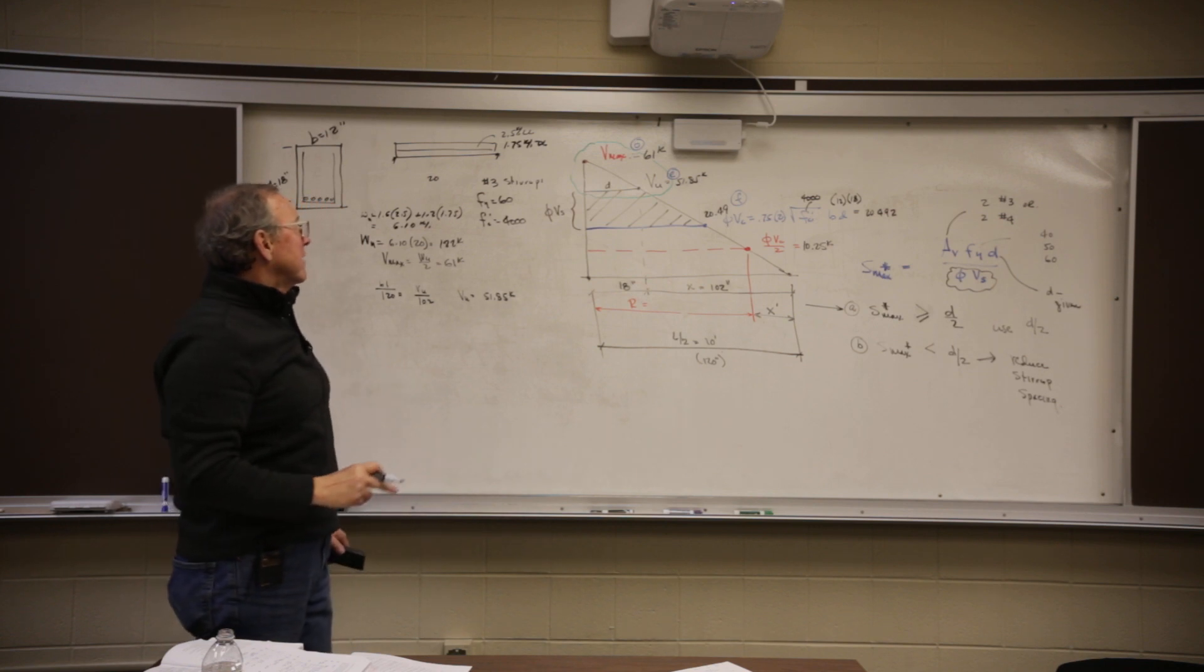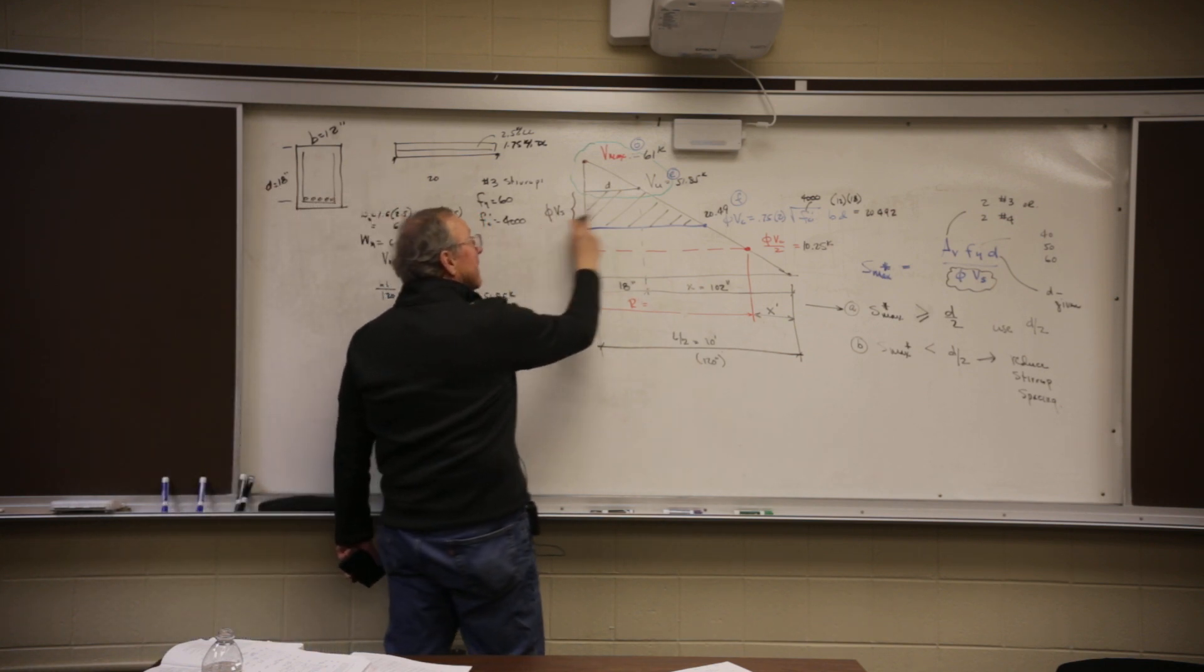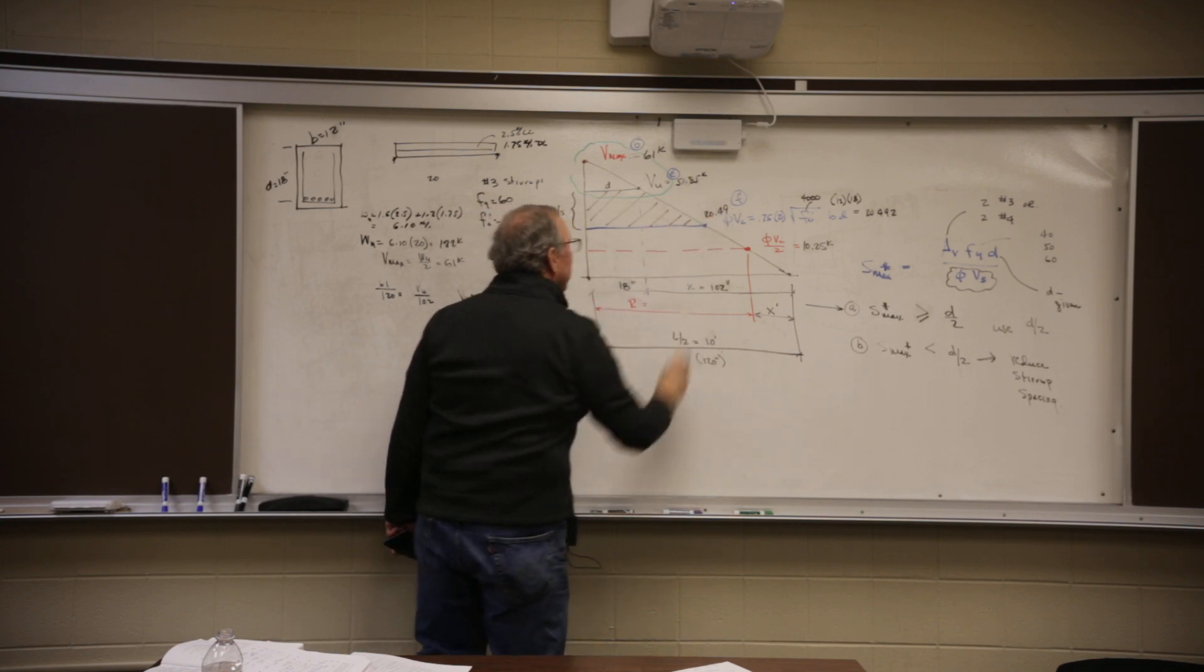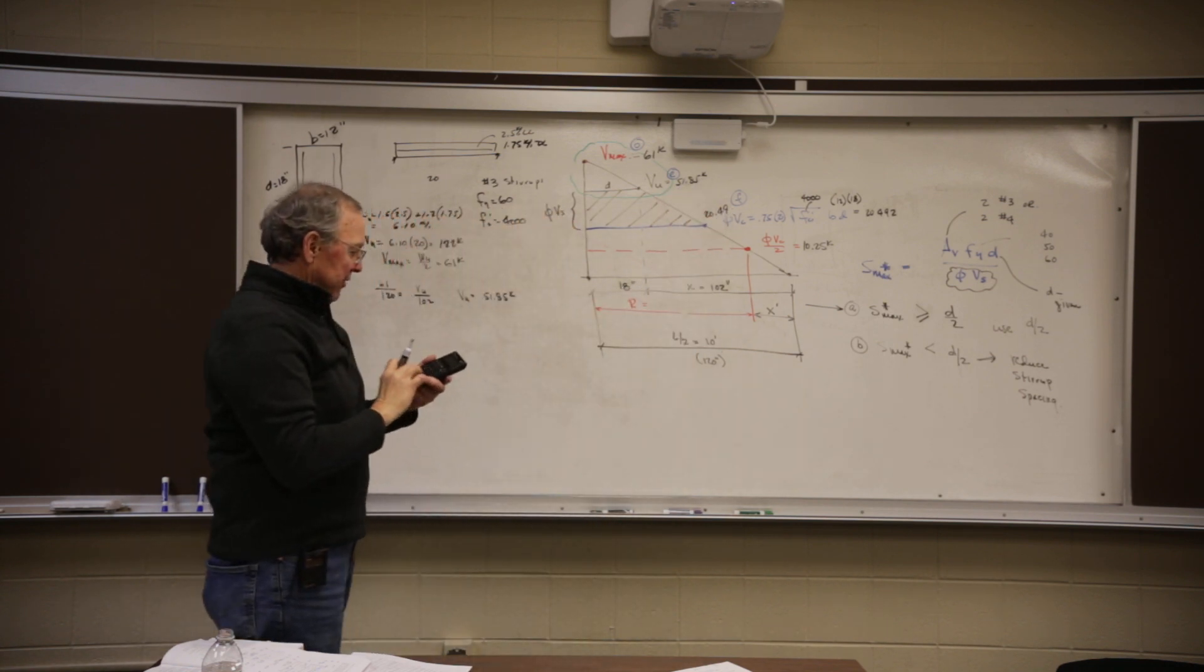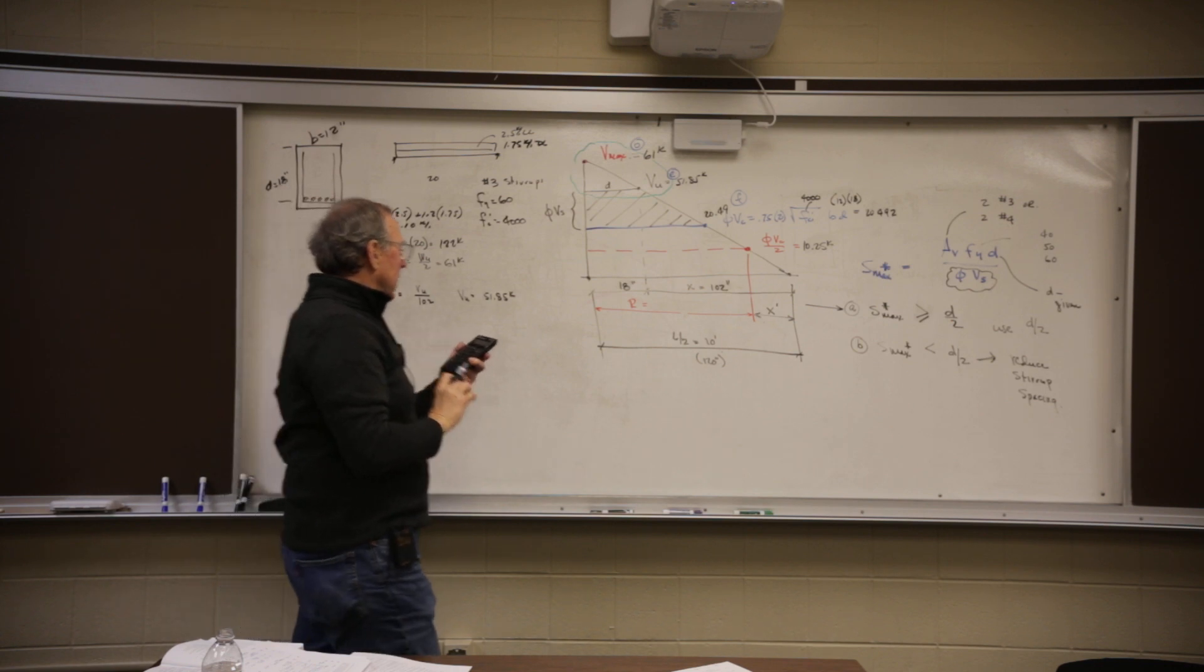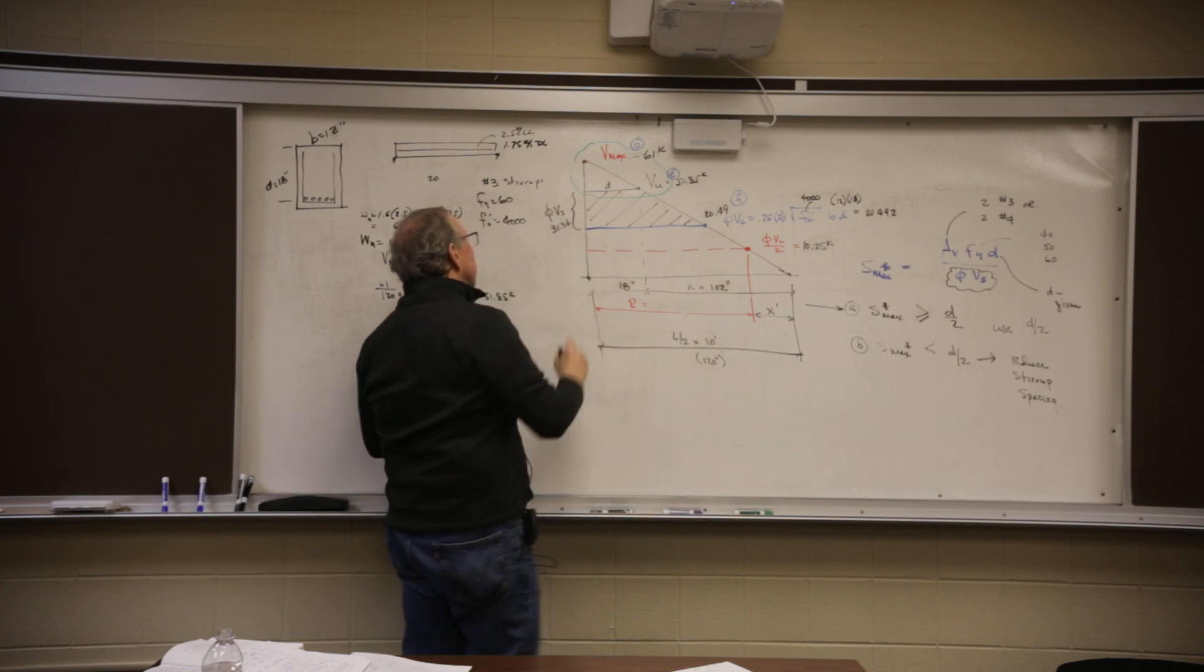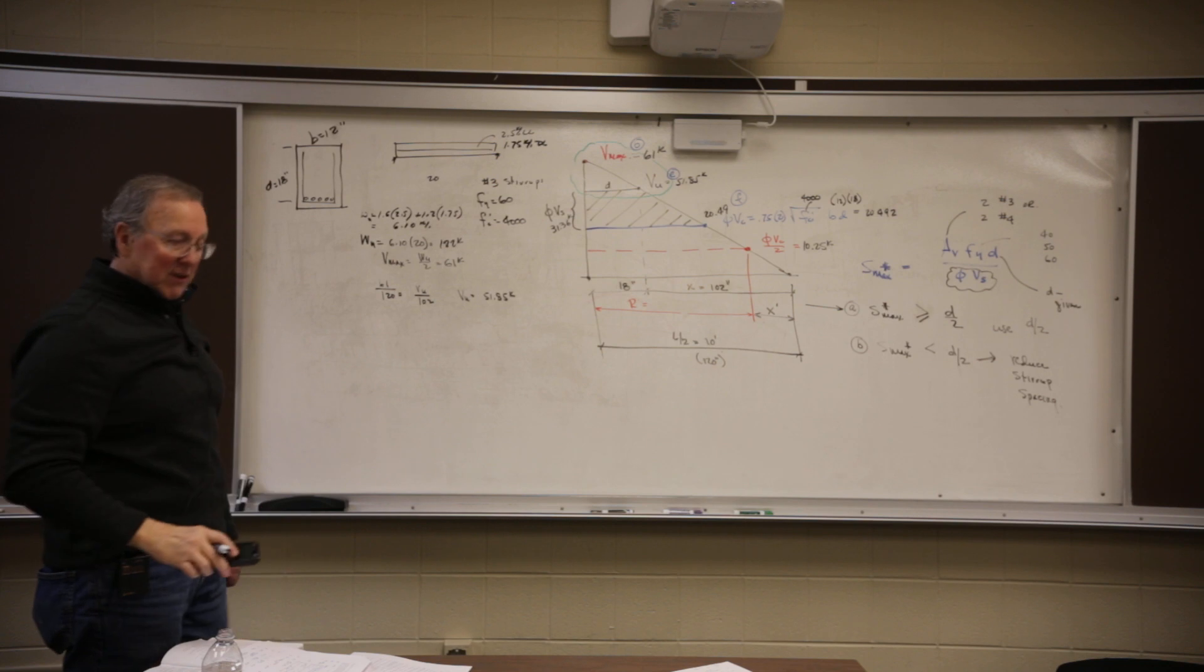Now I'm going to take one quick step. 5 vs. I already got 51.85 minus 20.49. So I'm going to do that real quick. 51.85 minus 31.36. Okay, that takes care of my chart.